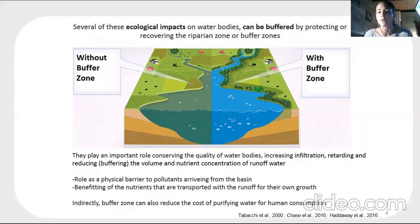These buffer zones are bands of native vegetation located between the crops and the water body. They play a role as physical barriers to pollutants and as tools that benefit from the nutrients transported with the runoff for their own growth.